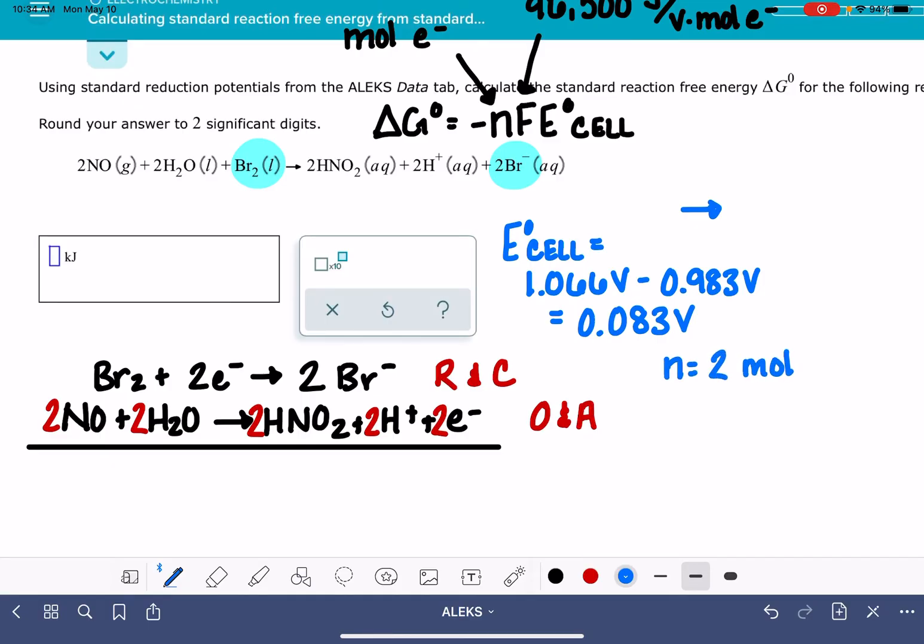I'm not going to go through the process of actually adding it. So that means that our number of moles of electrons, in this case, is two. And again, that's because that's the number of electrons that it takes to balance these two half reactions with respect to each other.